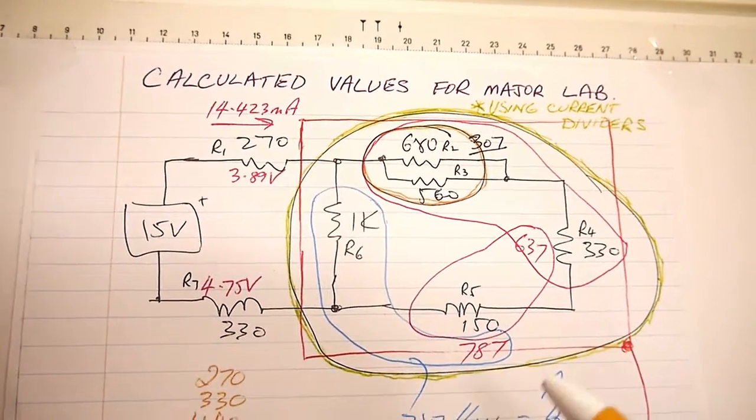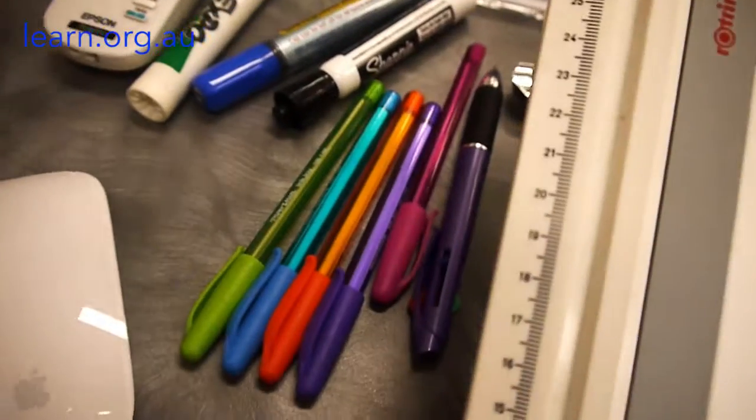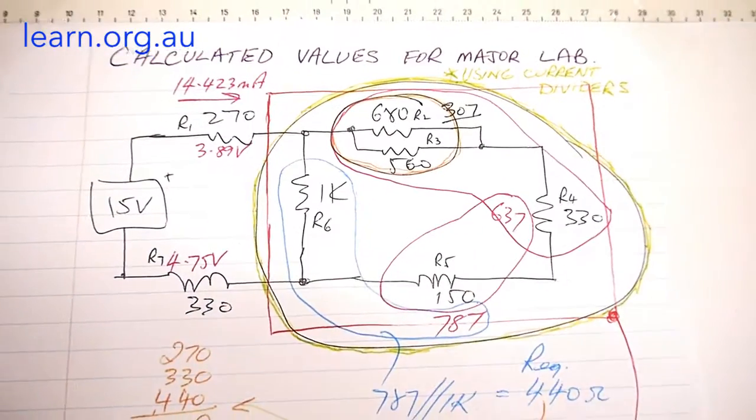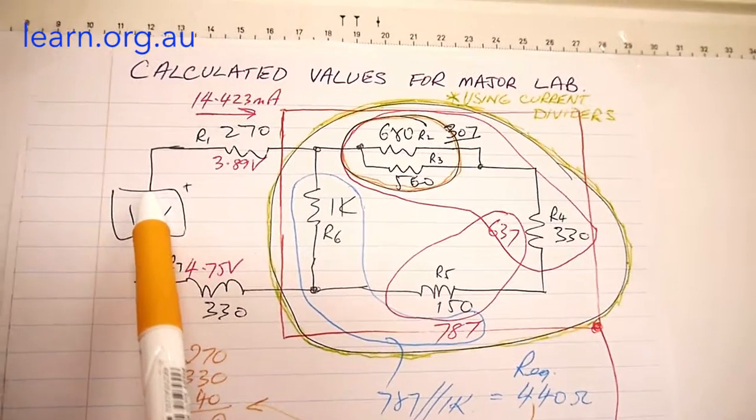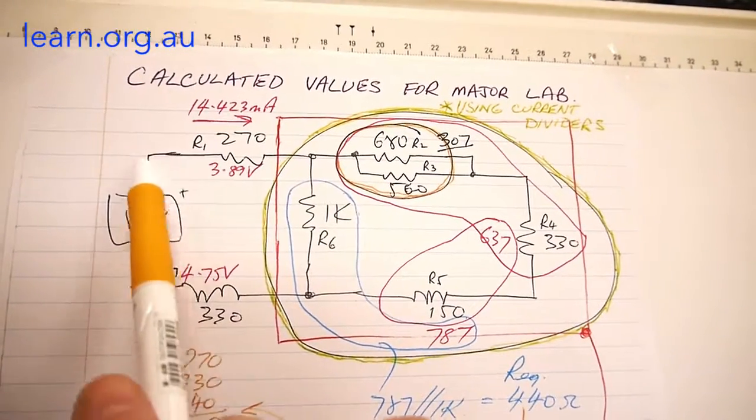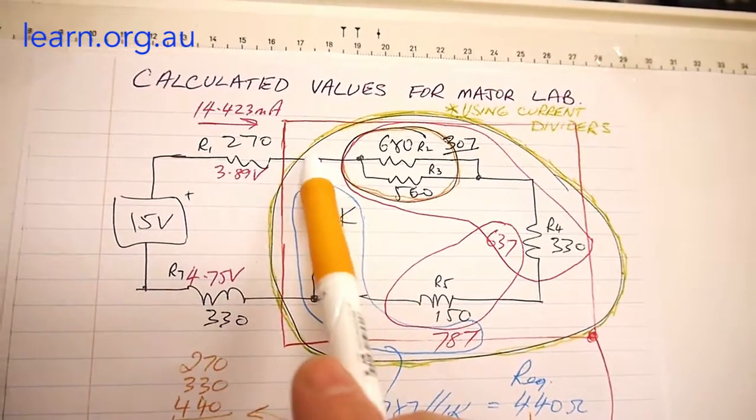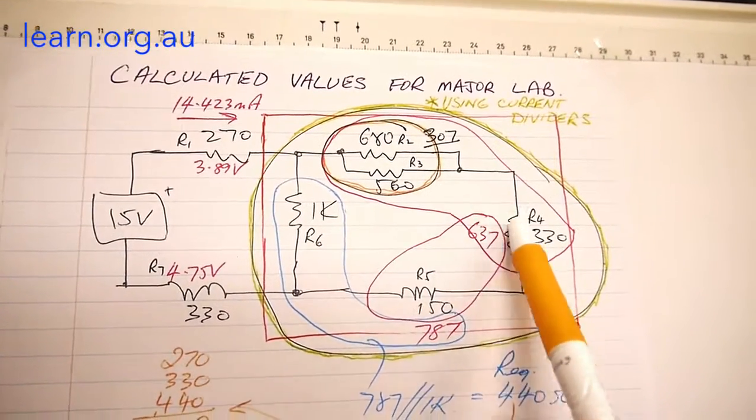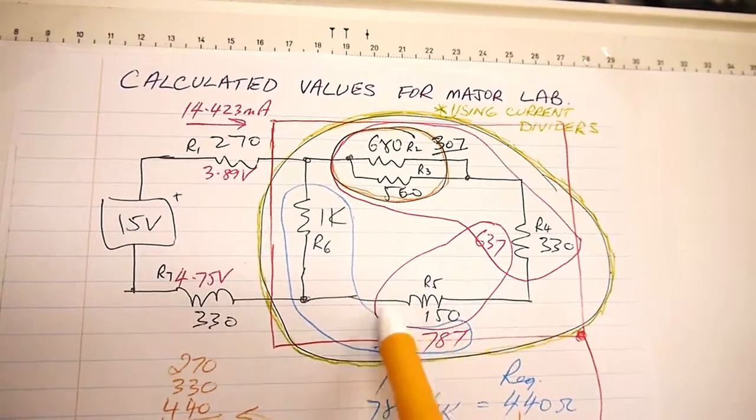I've used some different colors here. Different colored pencils are really handy. I've looked at this circuit and said I've come out of the 15 volt supply and the current flows through 270 ohms, then it comes in and splits down through 1k and through this other network of 680, 560 in parallel.